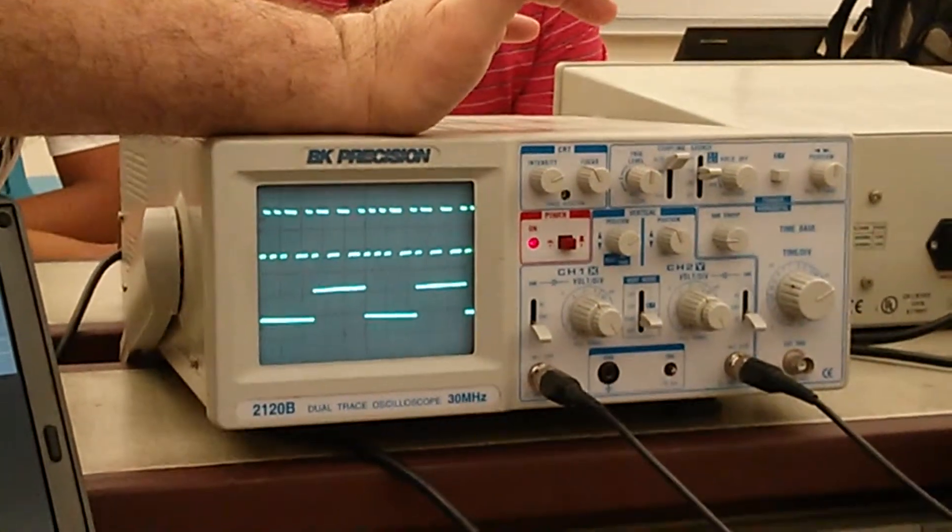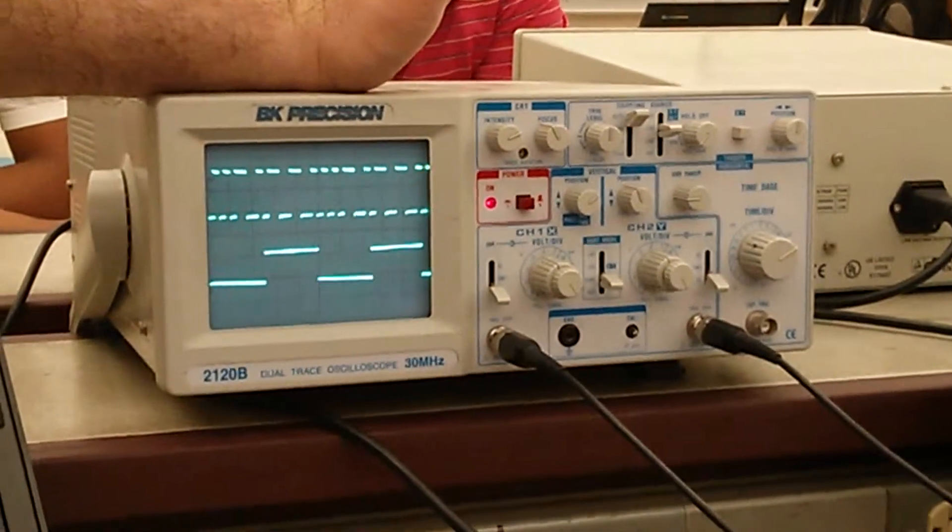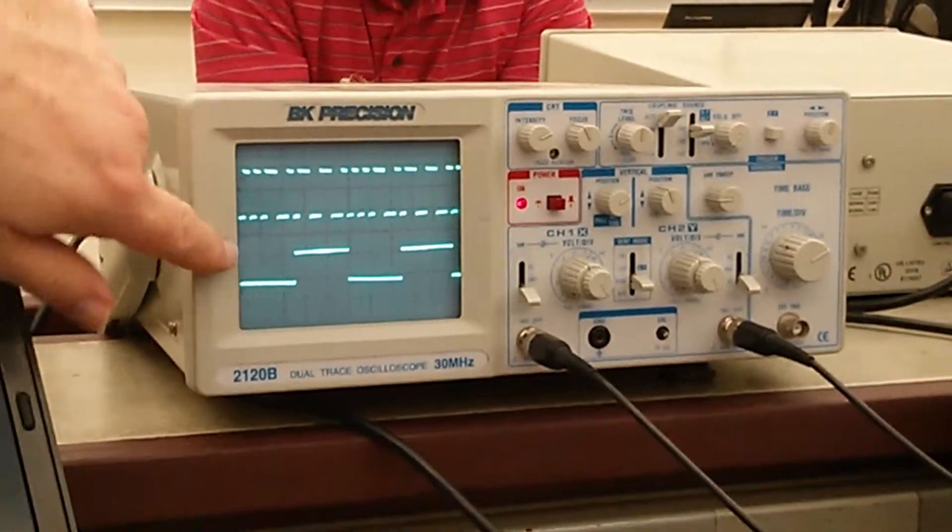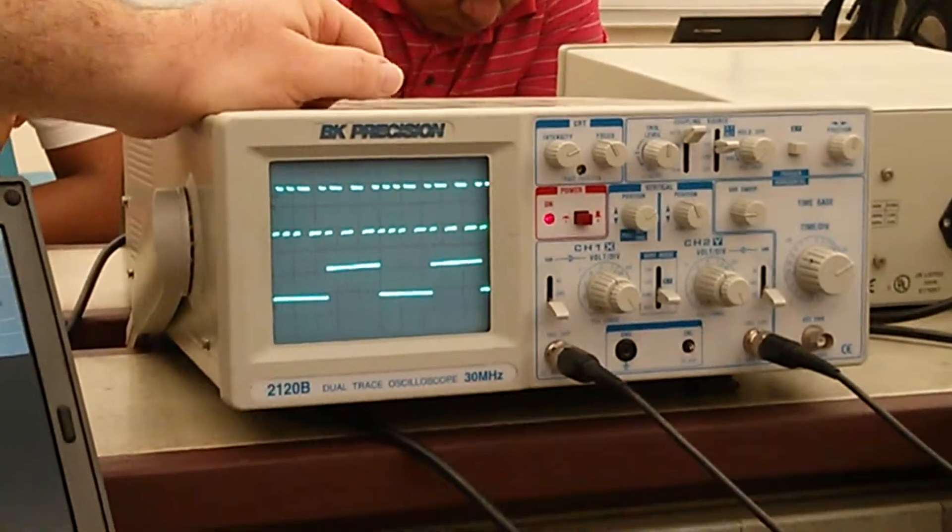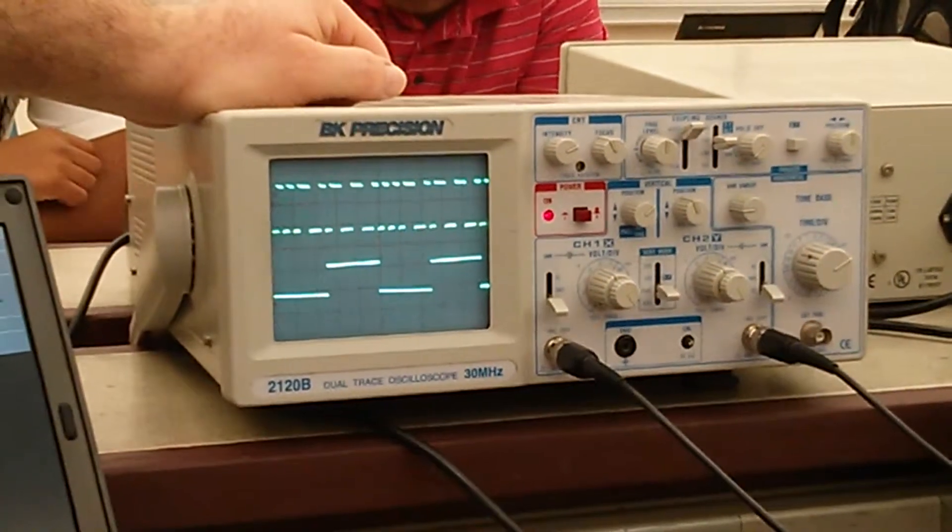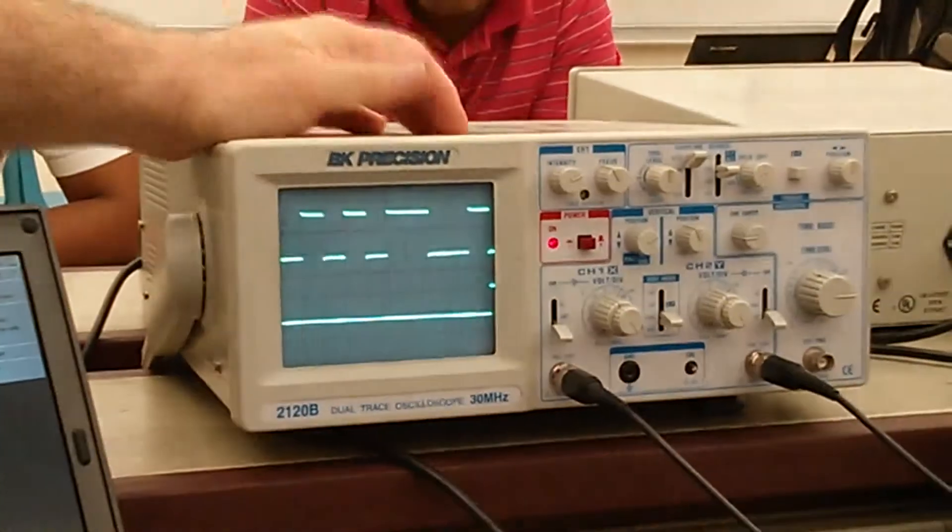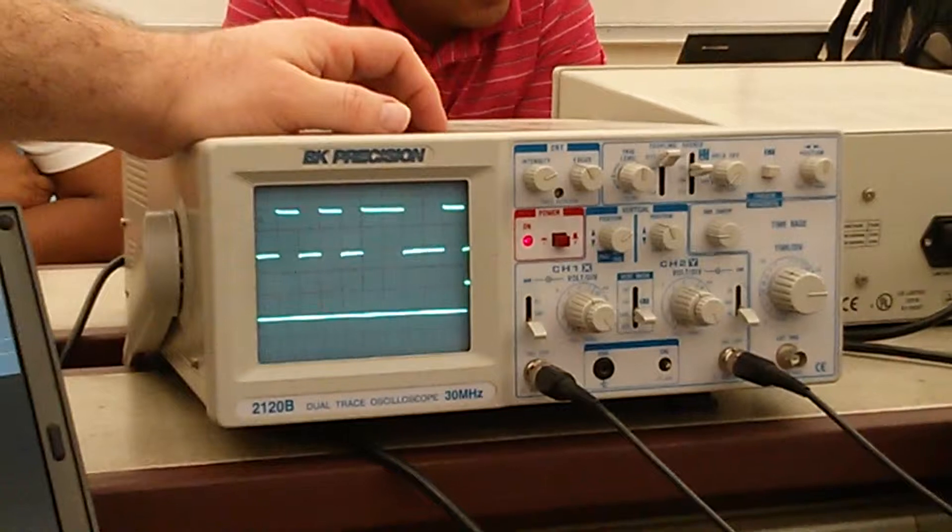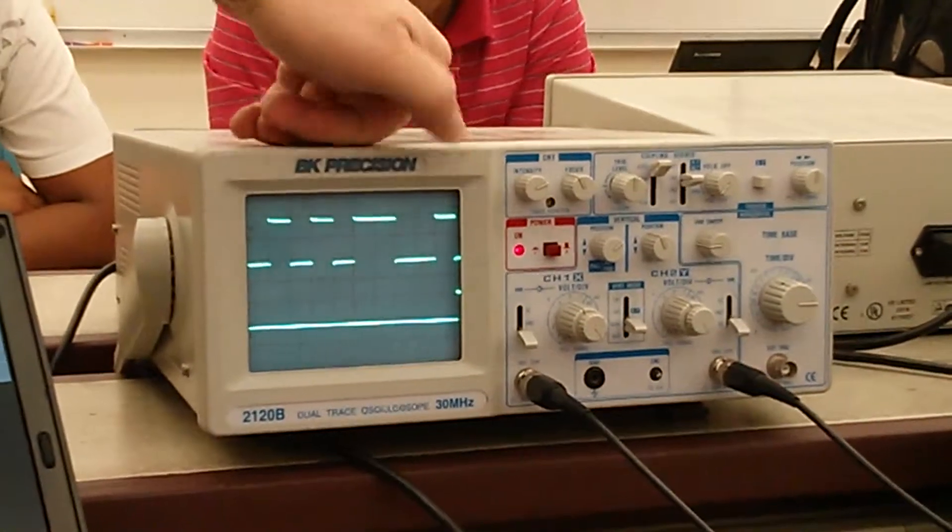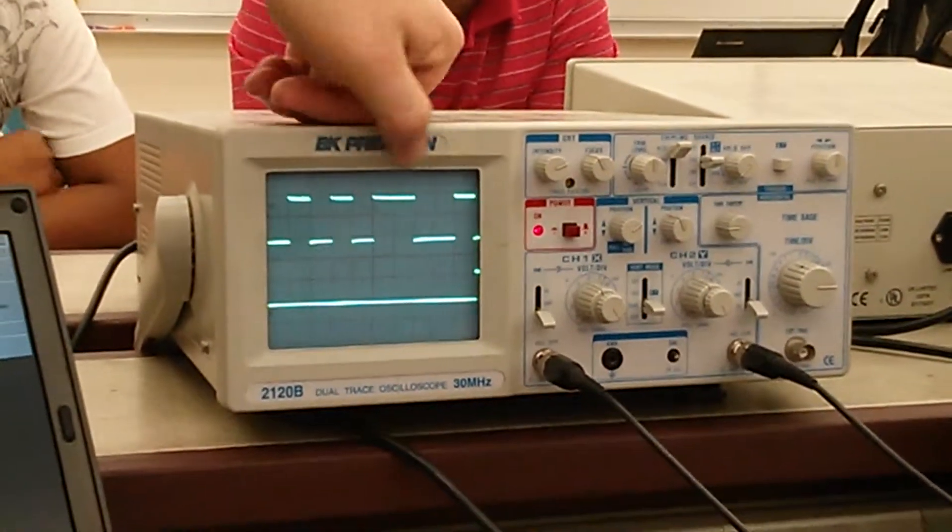So when we trigger on channel two, the lower frequency signal, that goes away. We have a nice periodic signal and always trigger on the same signal. Now I'm going to bump that back up so I have one bit per graticule, and we see our serial transmission.